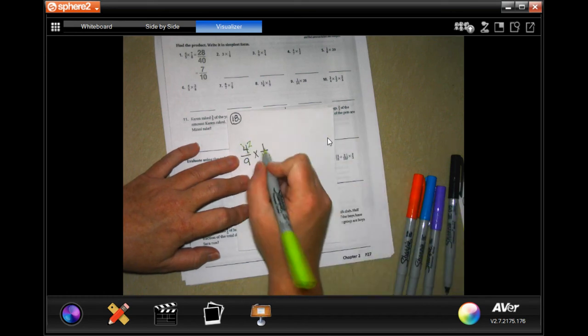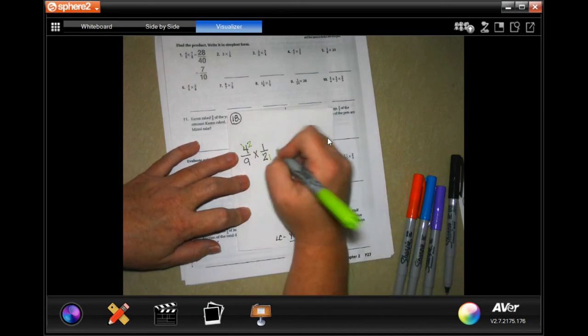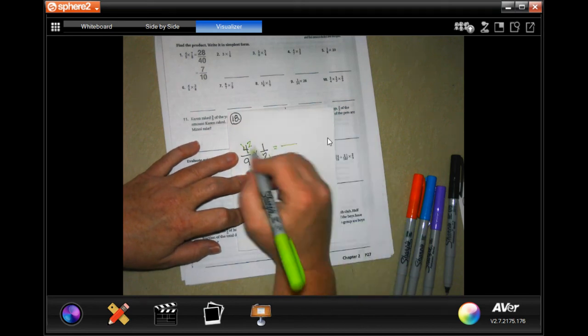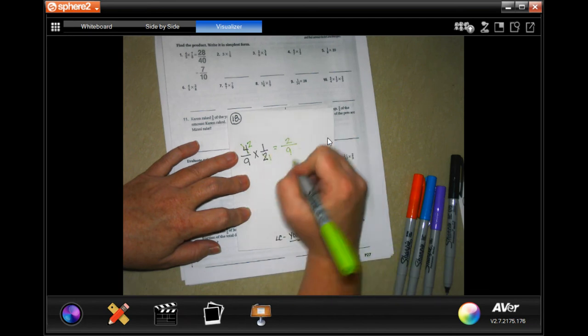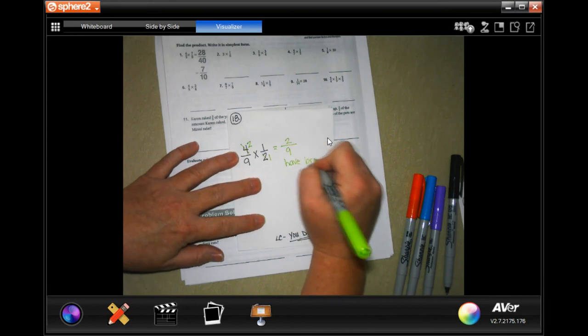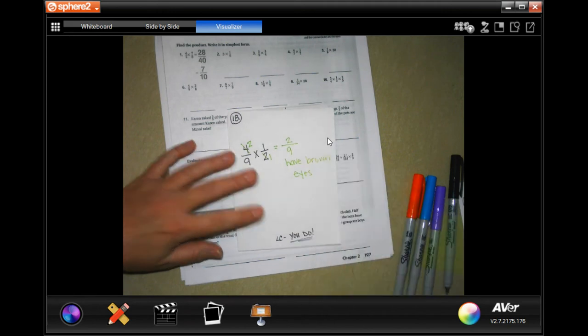Now I can't reduce anything by 9 or by 2 anymore, so I just have to multiply straight across. 2 times 1 is 2, 9 times 1 is 9. So 2/9 have brown eyes.